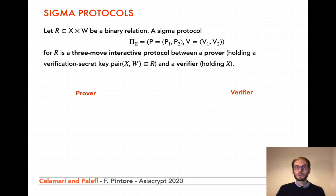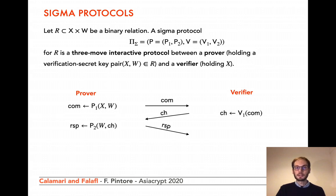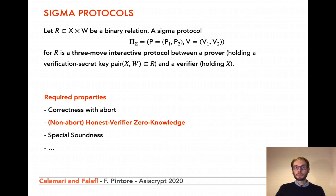The interaction goes as follows. The prover produces a commitment running P1. The verifier runs V1 to produce a challenge CH. The prover runs P2, obtaining a response — we allow P2 to abort with some probability, in which case the response is a special symbol denoting abort. Finally, the verifier runs V2 to either accept or reject. Among the standard properties required of a sigma protocol, we mention non-abort honest verifier zero knowledge, which guarantees that the response produced by the prover does not give any information about the secret key.